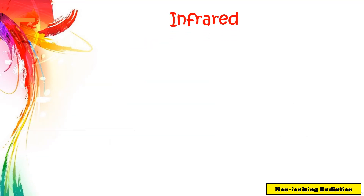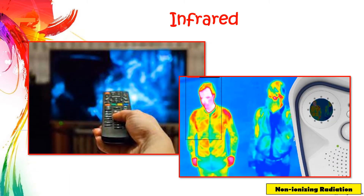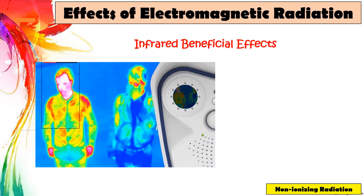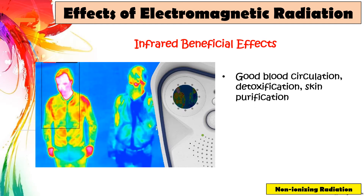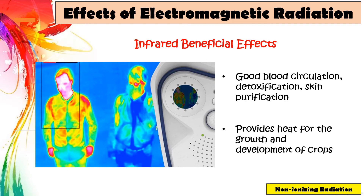Infrared is used in remote controls, night vision goggles, and thermal scanners, which are widely used nowadays because of the COVID-19 pandemic. About half of the sun's rays are infrared, which we feel as heat. The beneficial effects of infrared include good blood circulation, detoxification, skin purification, and it also provides heat for the growth and development of plants.